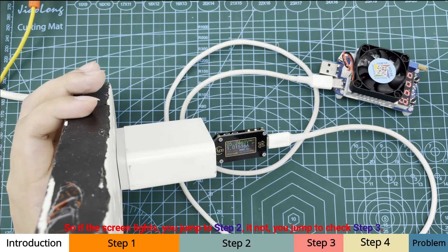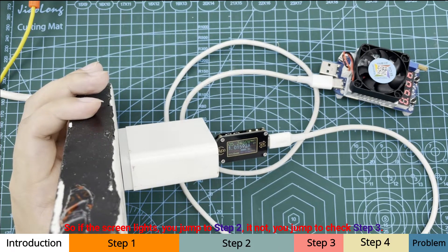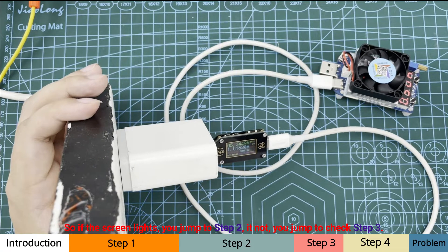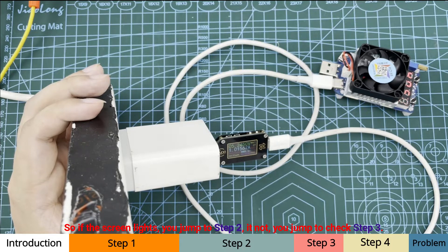So if the screen lights, you jump to step 2 to continue to check. If it does not light, you jump to step 3.